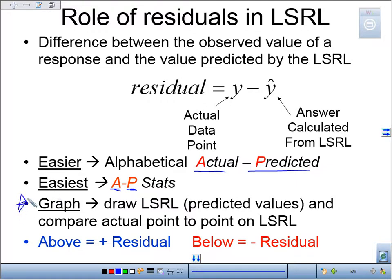If you draw a least squared regression line and compare the actual point to the point on the LSRL, a point above the least squared regression line would be a positive residual. If you have a point below, that will be a negative residual.